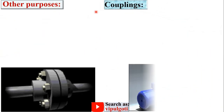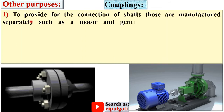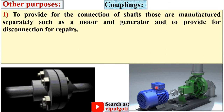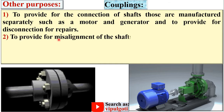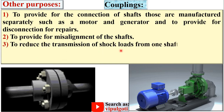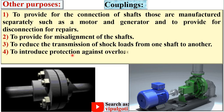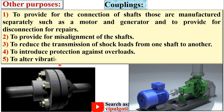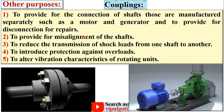Other purposes of couplings include: to provide for the connection of shafts that are manufactured separately, such as a motor and generator; to provide for disconnection for repairs; to provide for misalignment of the shafts; to reduce the transmission of shock loads from one shaft to another; to introduce protection against overload; and to alter vibration characteristics of rotating units.